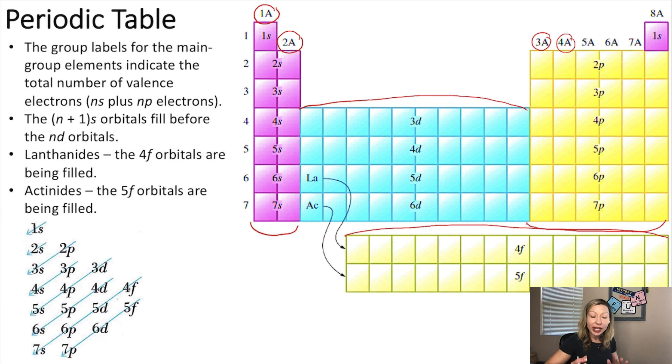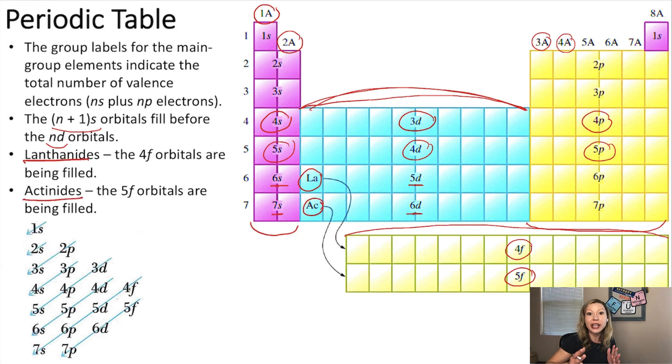We already know that the n plus 1 s orbital fills before the nd orbital. That's why the d block, right in the middle, is placed between the s and the p blocks. Because first, you are going to fill up the 4s orbital and only just after the 3d and then the 4p. Again, 5s and then the 4d and the 5p. Interestingly, we are going to fill up the 4f and the 5f orbitals between the 6s-5d and 7s-6d orbitals. Basically, these elements, which are called lanthanides and actinides, should have been placed between the s and the d block. But it would make the periodic table really long, so it would be very inconvenient.